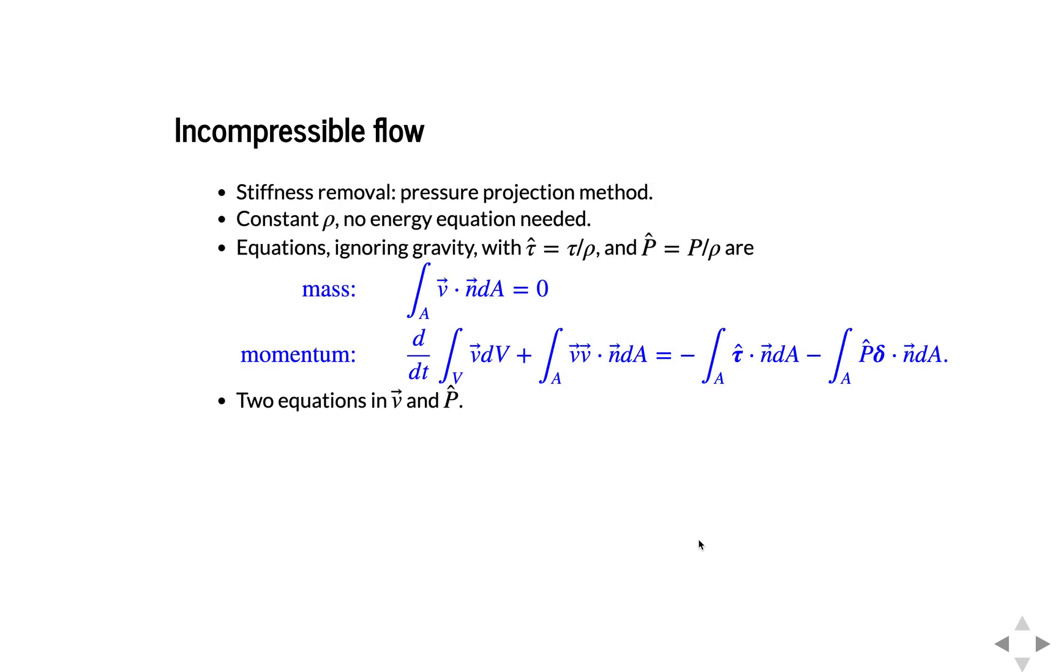So instead of solving those compressible flow equations where we had energy and an equation of state, we can remove the stiffness in the problem by using a so-called pressure projection method. There's other approaches such as pressure gradient scaling where you can artificially precondition the system by, for example, artificially changing the sound speed. And that's possible up to a certain extent. This is probably a more common approach to use a pressure projection method, and we'll discuss that briefly here. So here we have constant density.